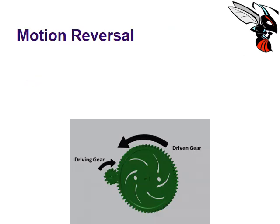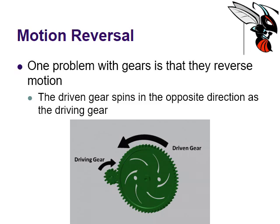One of the challenges, or side effects you might call it, of using gears is that gears reverse motion. So the driving gear, if it's moving in one direction, that means the driven gear — the one being driven by it — is moving in the opposite direction. Does that matter? Sometimes it matters. But what can you do about it?